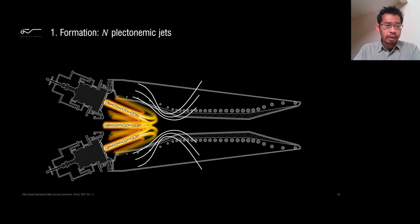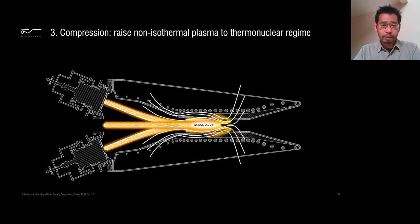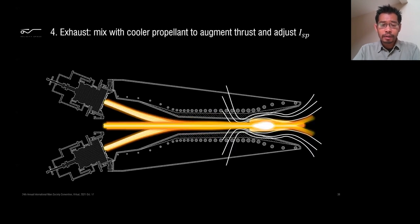These are the steps of how it works. You form any number of plectonemic jets at the beginning into that front magnetic field. As it travels, the reconnection preheats the plasma and especially the ions, which compared to other standard heating methods - radio frequency, neutral beams, charged particles - this is internal. It's very high power efficient and directly heats the ions and not the electrons. So then you can start raising this non-isothermal plasma into the thermonuclear regime over slightly longer time scales than the electron component. And as it travels down the nozzle to the throat, it reaches peak condition. And then as the fusion reactions heat the plasma further, you can mix it with a cooler propellant and adjust the ISP.